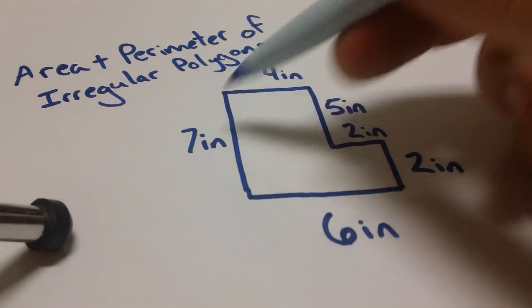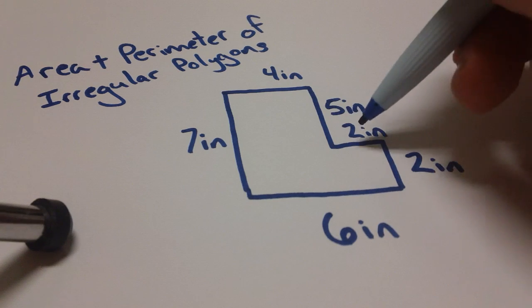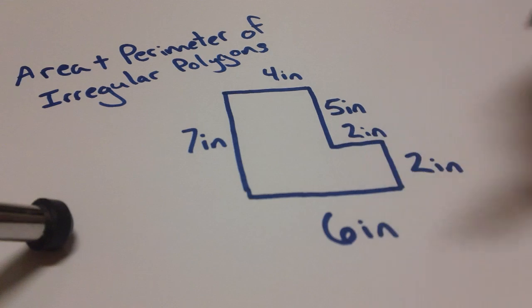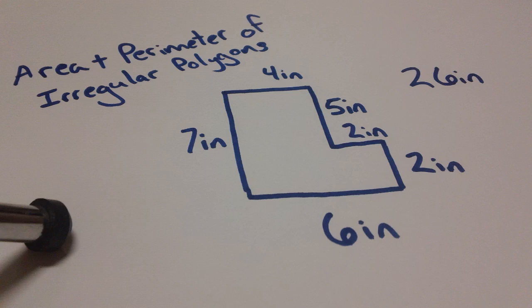Anyway, perimeter. Seven plus four, we're going to get eleven. Eleven plus five, sixteen. Sixteen plus two, eighteen, twenty, and then twenty-six. So our perimeter is in fact just going to be twenty-six inches, right?